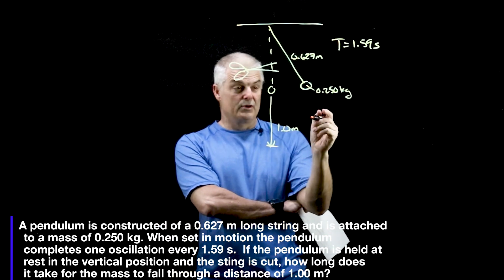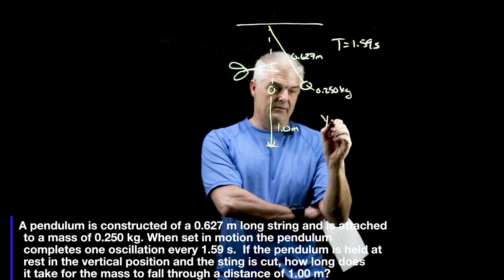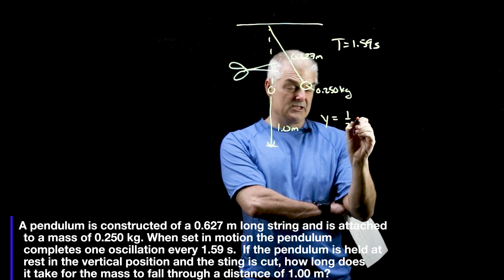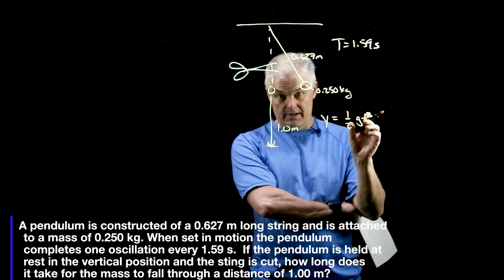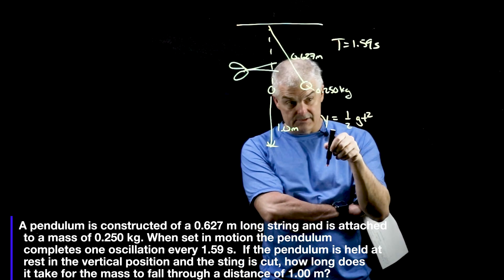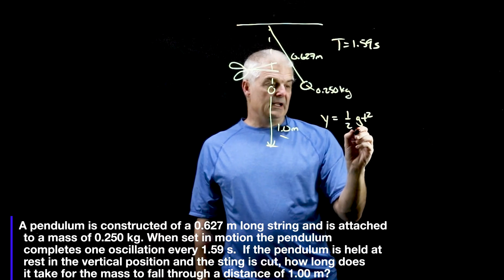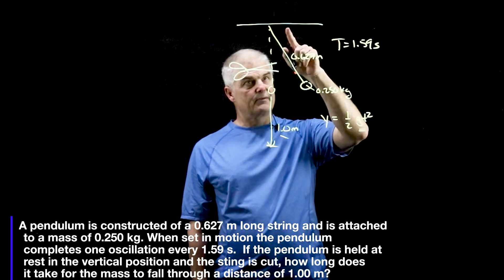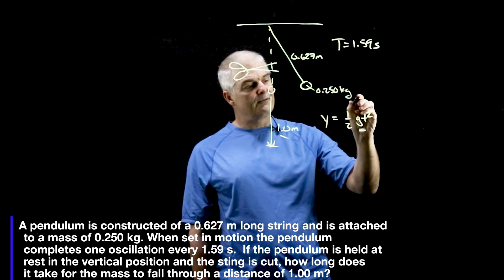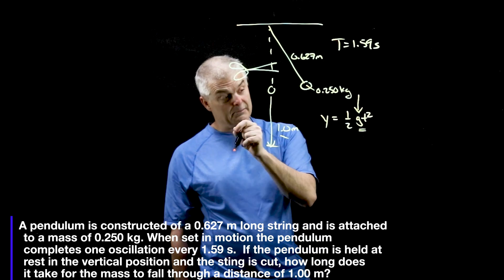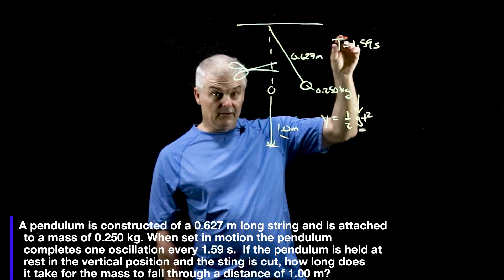Now, we've done a problem like this. If you just drop something, we use the equation y equals 1/2 gt squared. So this is how we solve for how long it would take. I know the distance y being 1 meter. If I drop an object, 1 meter. So in this problem, because we've got this whole pendulum thing, we're going to solve for g first, not using 9.8, but find out what it would be here.